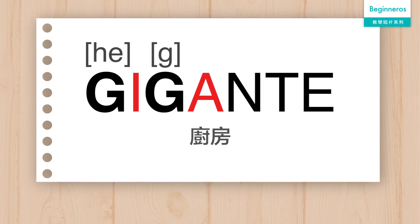Let's look at this example: Gigante. First G is with I, so it sounds like H. And second G is with A, so it's like G in Good. So this word is pronounced Gigante.